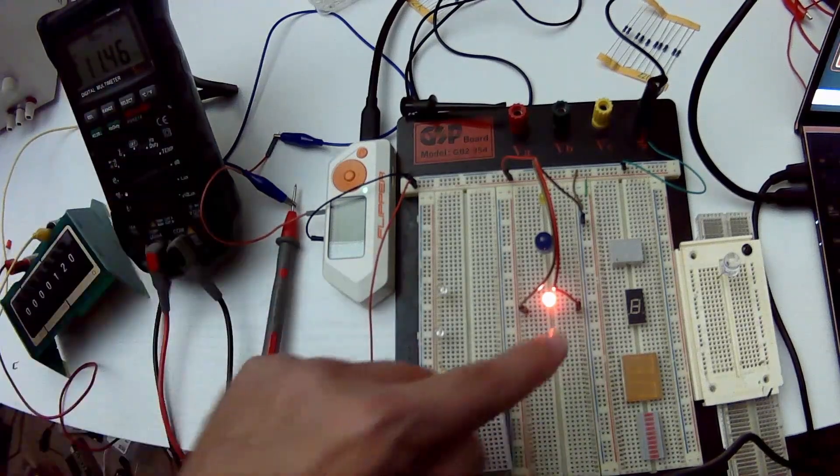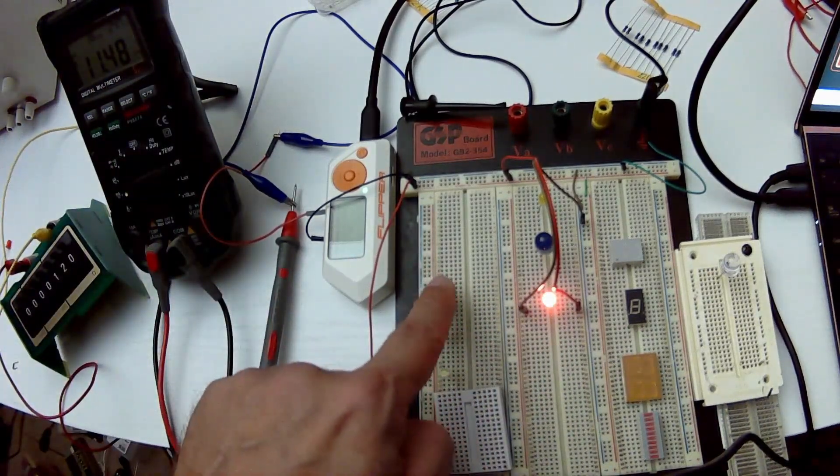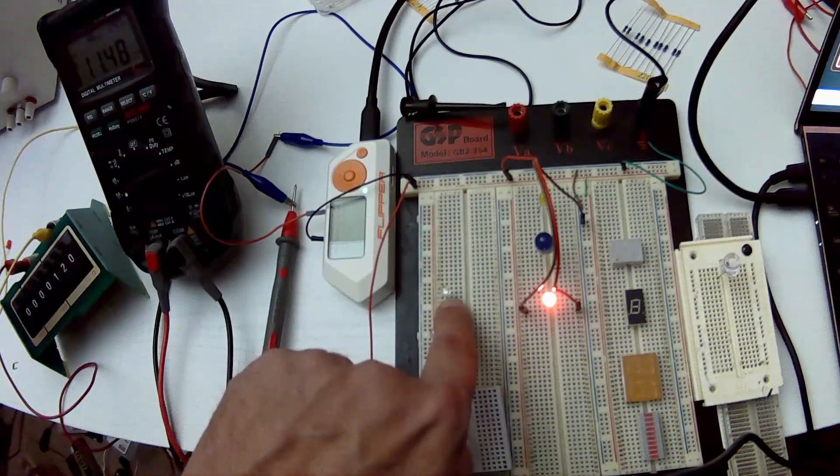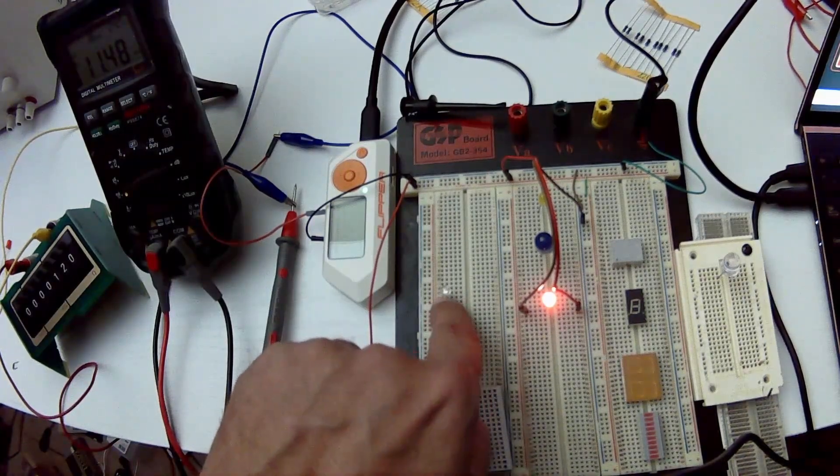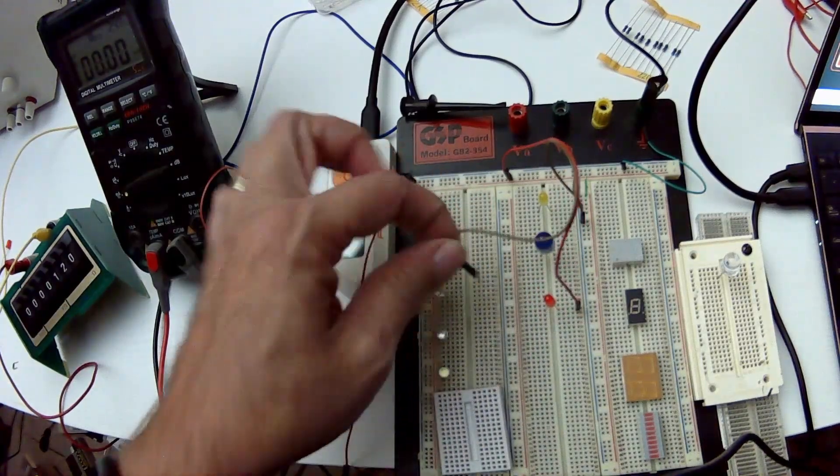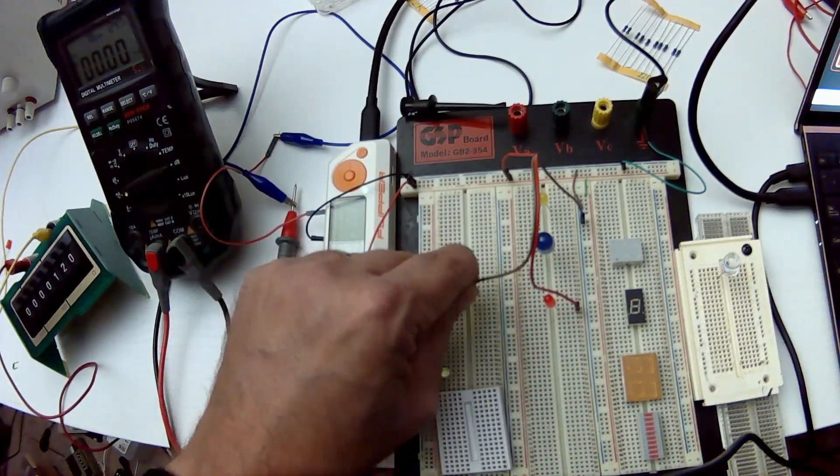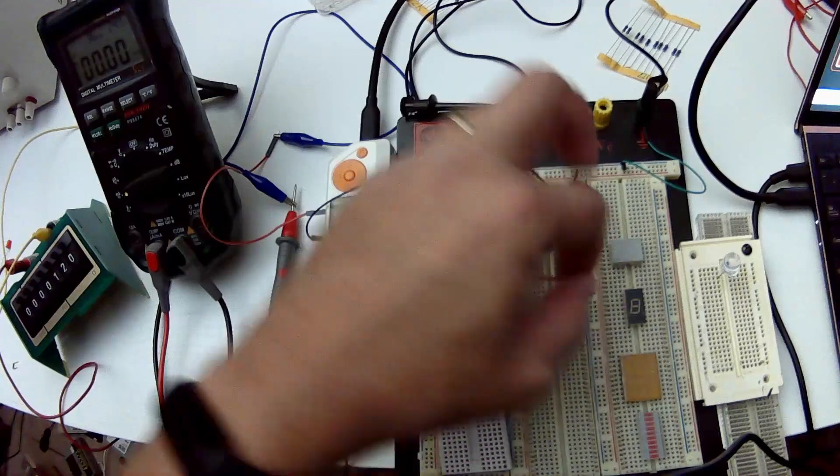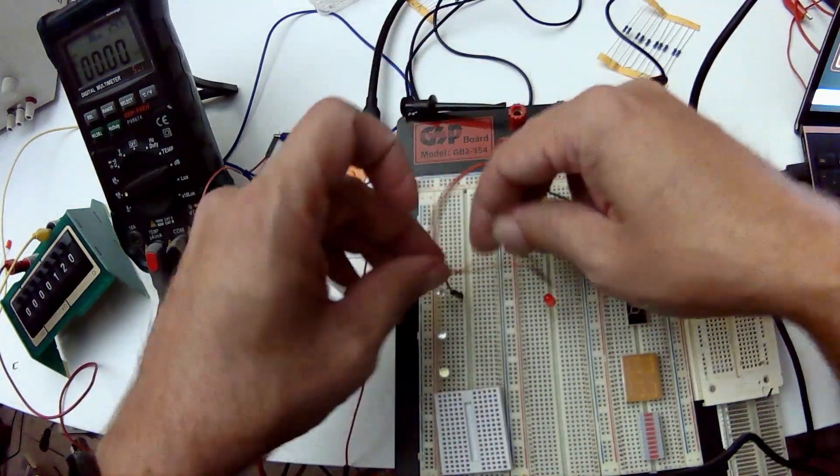So this LED is sideways. So one is in row 22 and one is in row 23. So we'll go ahead and move our ground wire over to row 23. And then we'll move our power wire over to row 22.